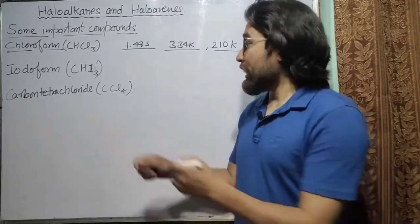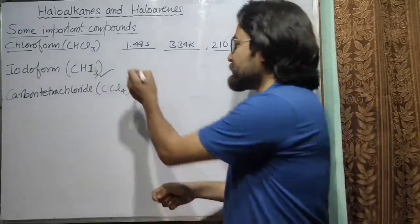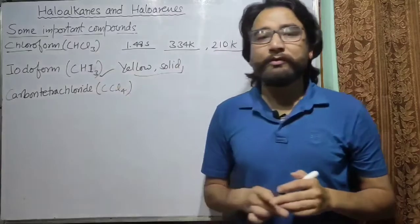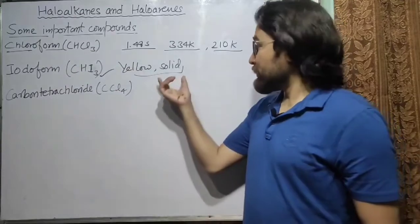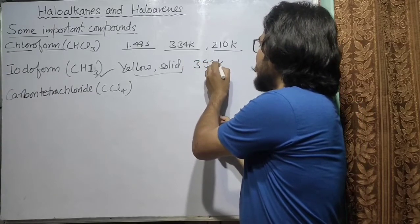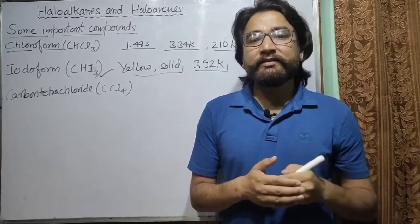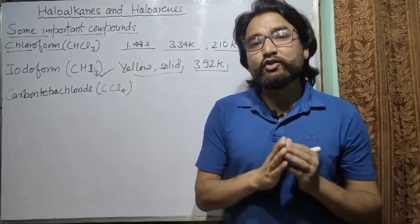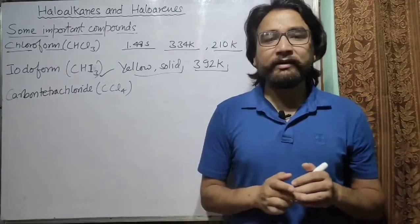The next compound is iodoform, with formula CHI3. Iodoform is a very important compound. Unlike chloroform, which is a liquid at room temperature, iodoform is a yellow crystalline solid with a melting point of about 392 Kelvin. It has a characteristic unpleasant odour. Like most haloalkanes, it is insoluble in water but soluble in organic solvents like ethers and alcohols.